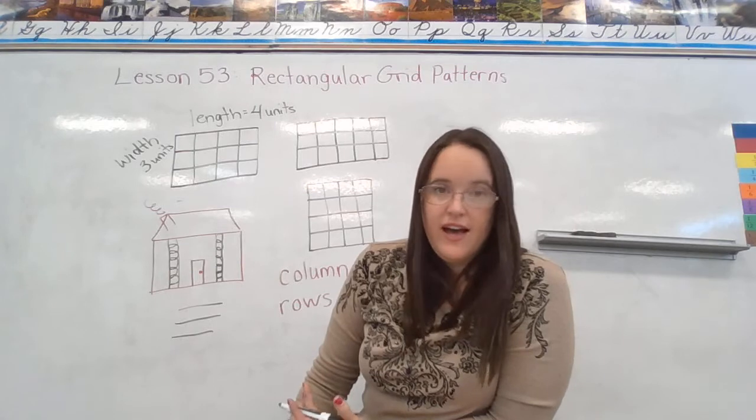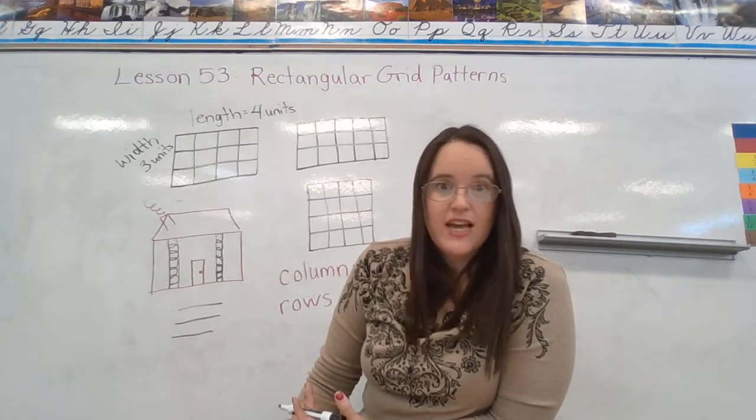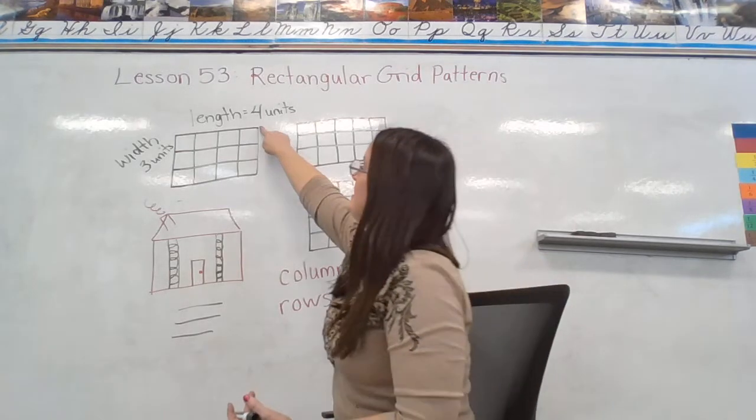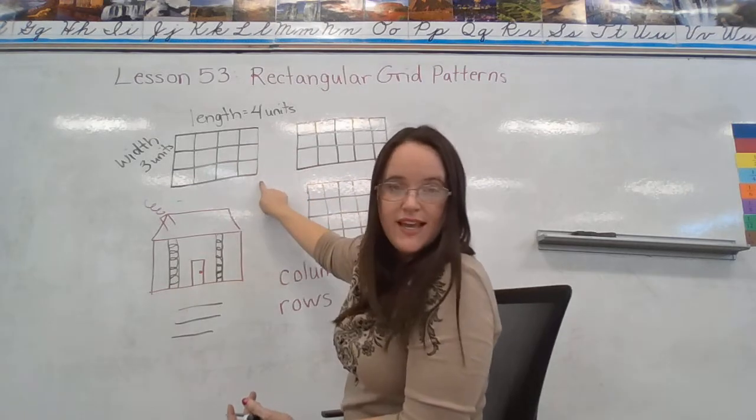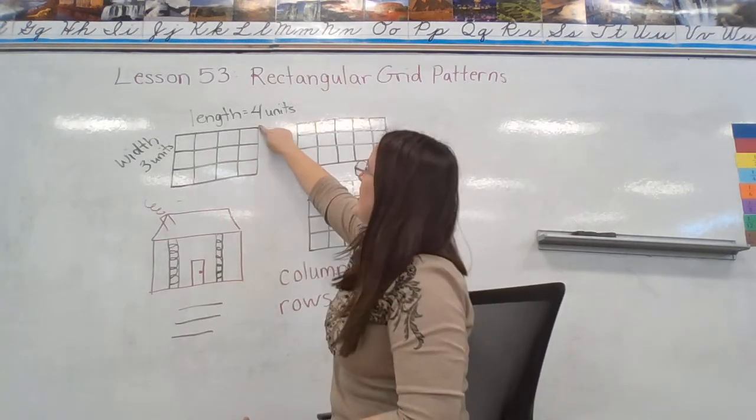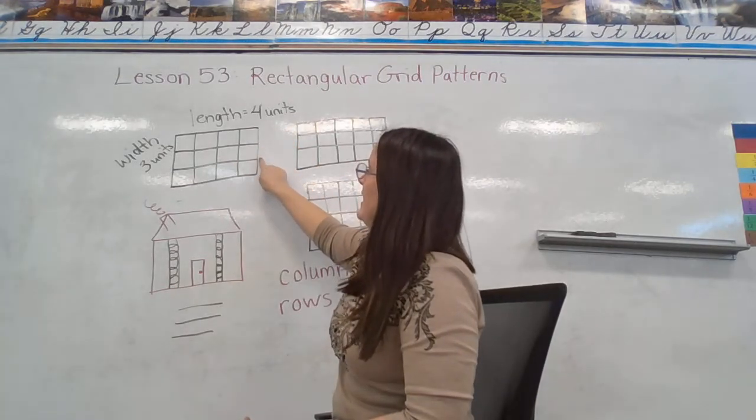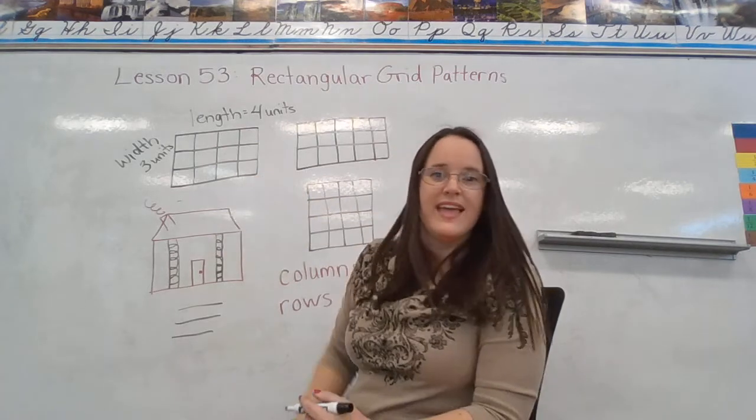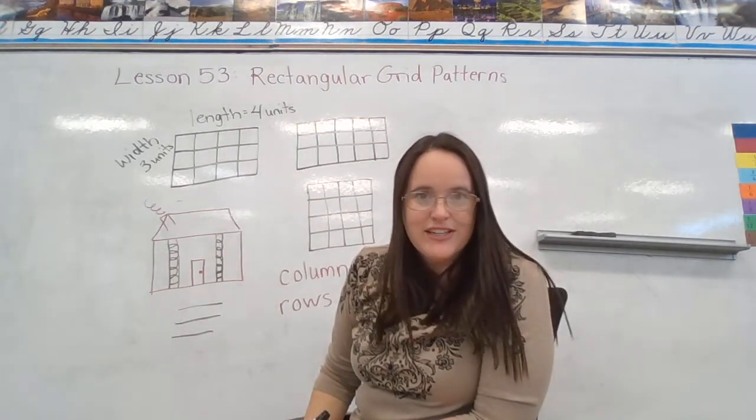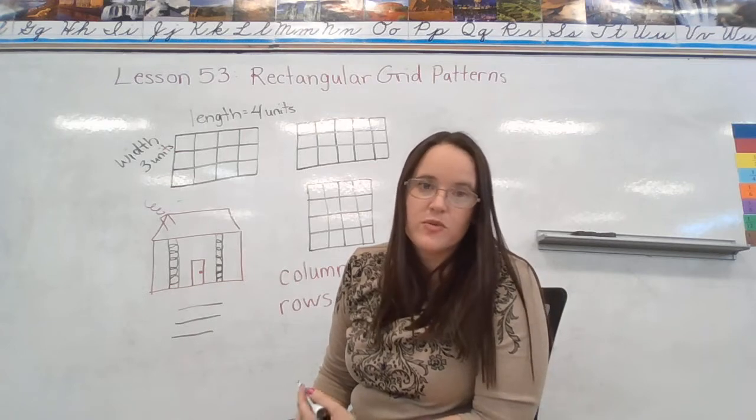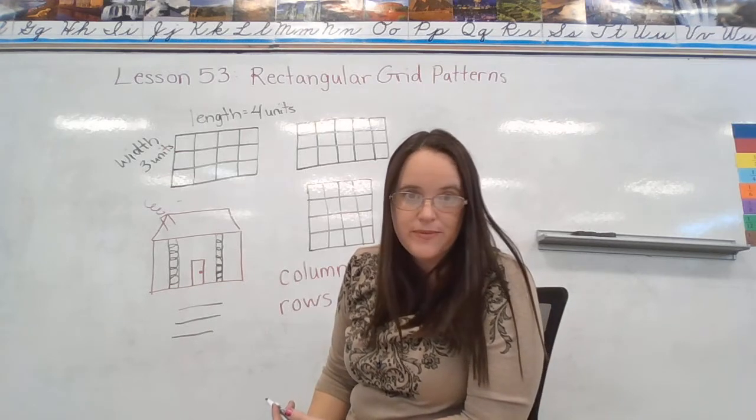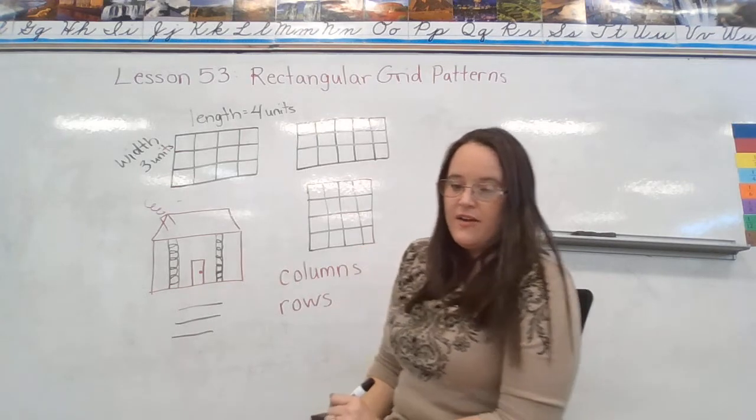Or if I think it's easier to count by fours, I could go the other way, down the columns, counting by fours. And I would say four, eight, twelve. Hey, I got the same answer. Either way I count, there are twelve square units inside that picture.